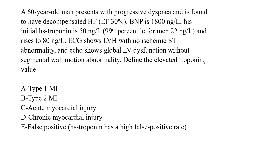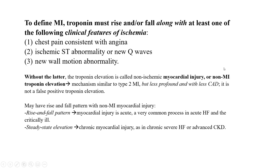This is acute myocardial injury. The definition of MI requires a troponin rise and fall plus at least one of the following three features: clinical symptoms of angina, ischemic ST abnormality or new Q waves, or new wall motion abnormality — so clinical, EKG, or segmental wall motion abnormality.